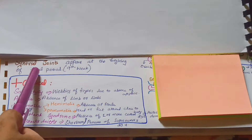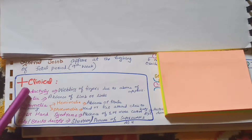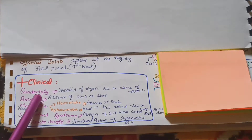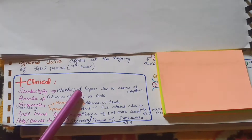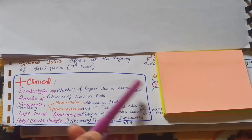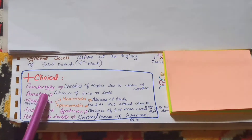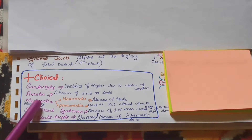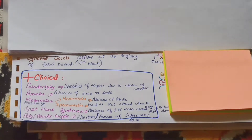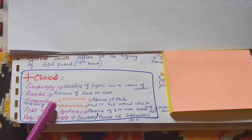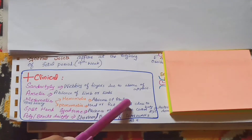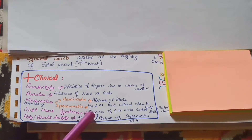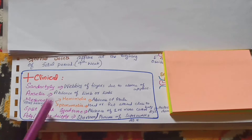Synovial joints appear at week 9. Now let's look at some clinical abnormalities in limb development. First, syndactyly — the webbing of fingers due to absence of apoptosis in the interdigital regions. Next, amelia is the complete absence of a limb or limbs. Meromelia is not complete absence but when a part of the limb is missing. It has two types: hemimelia, involving absence of the fibula, and phocomelia, in which the hand or feet is attached closer to the body.